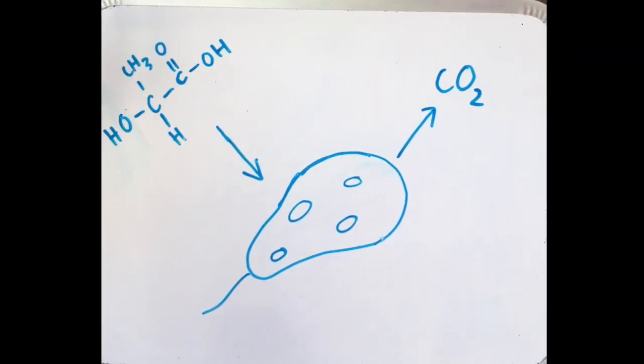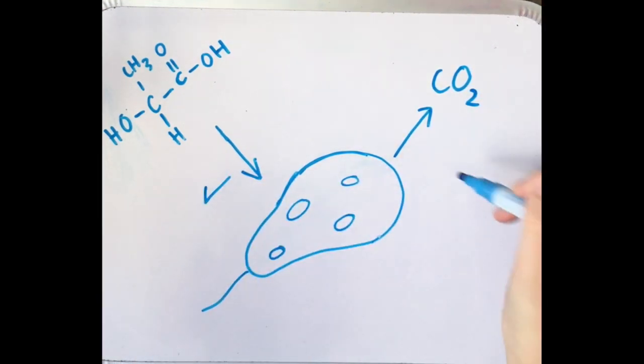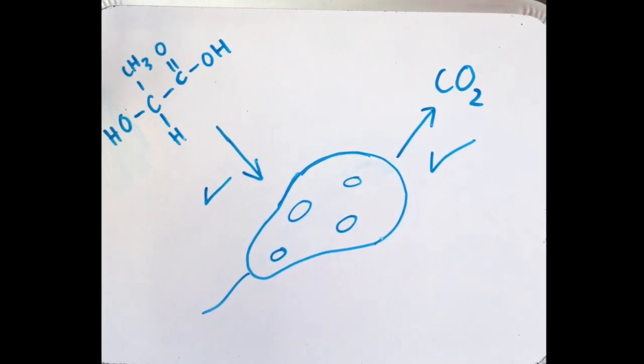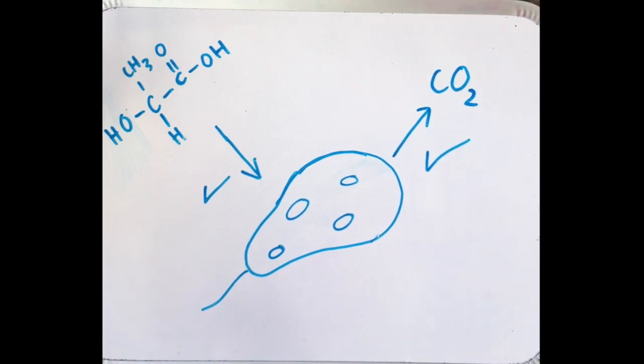These molecules can now be assimilated by chemoorganotrophic microorganisms and broken down into CO2. Once the whole chain has been hydrolyzed into low mass molecules and assimilated, biodegradation is complete.